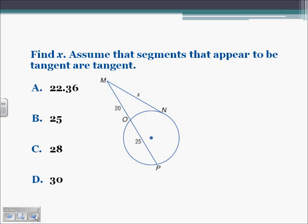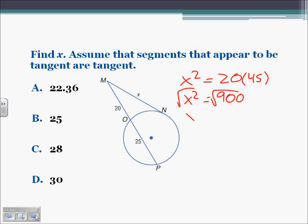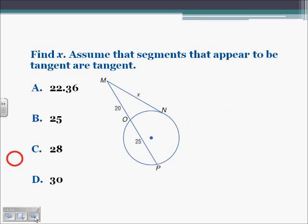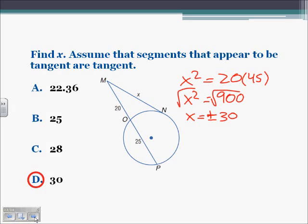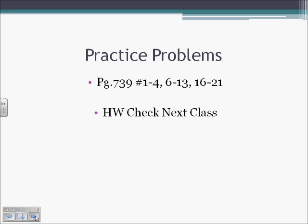Here we need to find X; assume segments that appear to be tangent are tangent. MN is a tangent segment, so X squared equals, on the secant, 20 times the whole thing, which is 20 plus 25 equals 45. So X squared equals 20 times 45, which equals 900. Square rooting both sides, X equals plus or minus 30. We don't need the negative segment length, so X is positive 30, which is answer D. This ends Section 10.7.